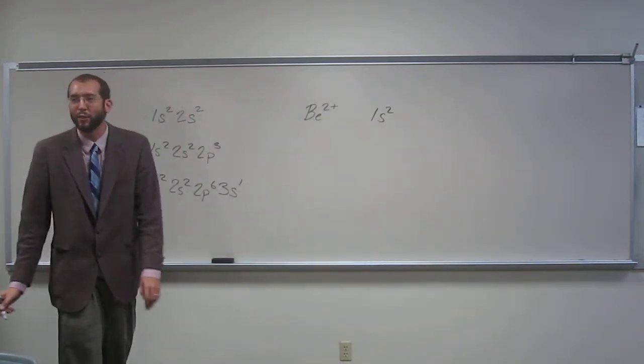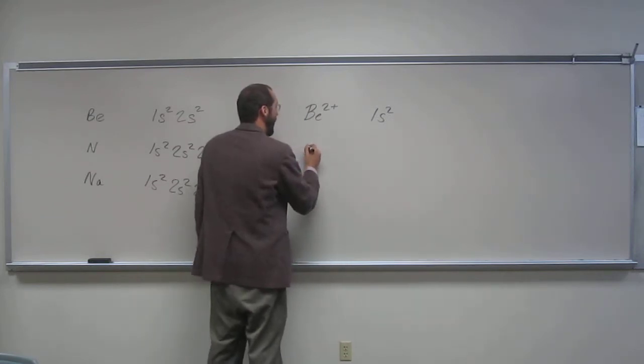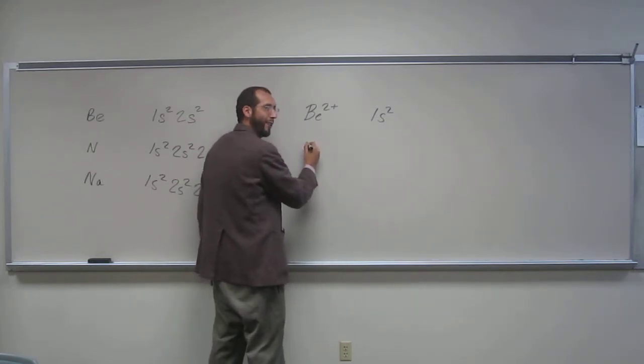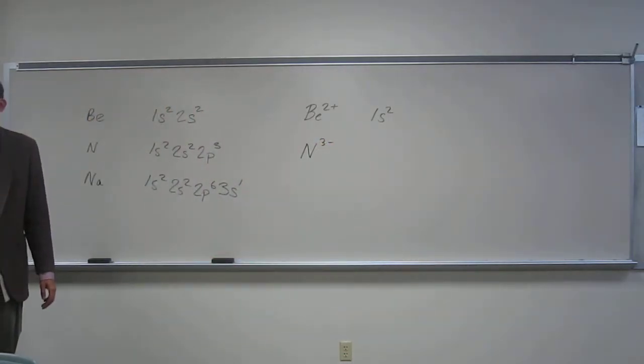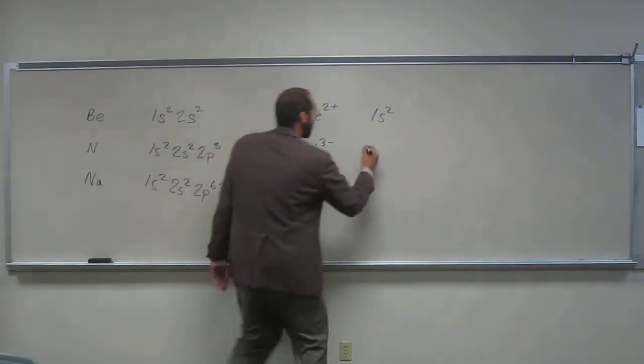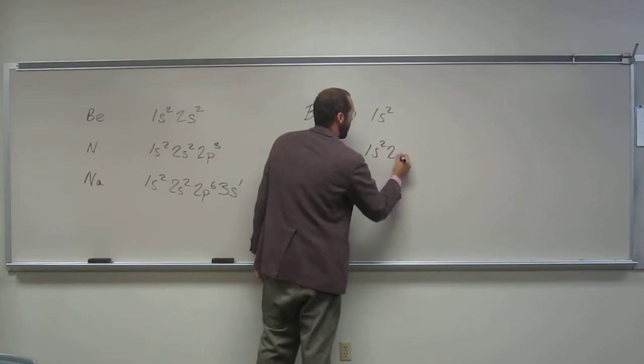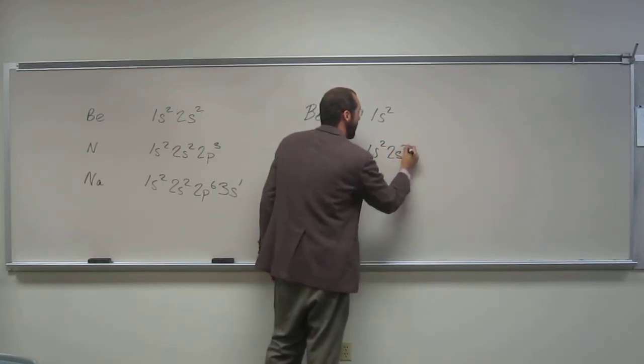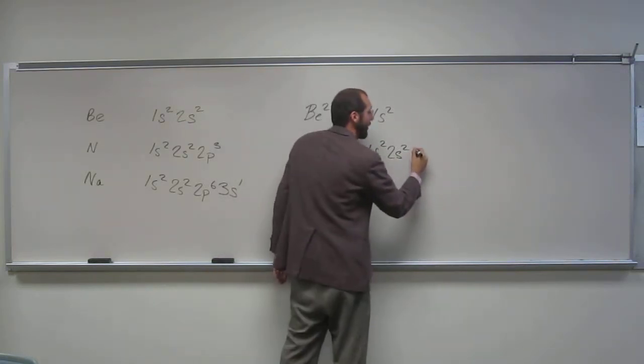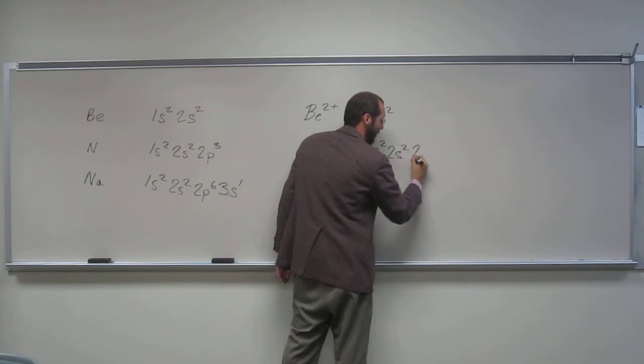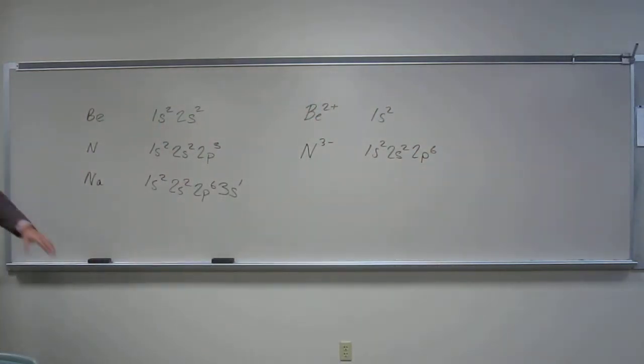Okay, so what's the common ion of nitrogen? You guys get it? Okay, so what is it? N³⁻, right? N³⁻, okay? So what is the electron configuration for that? 1s², 2s²... Sorry, I just couldn't hear what you guys were saying. 2p⁶. 2p⁶, right? Okay. If you guys said that, then you were doing it right. I just couldn't understand.